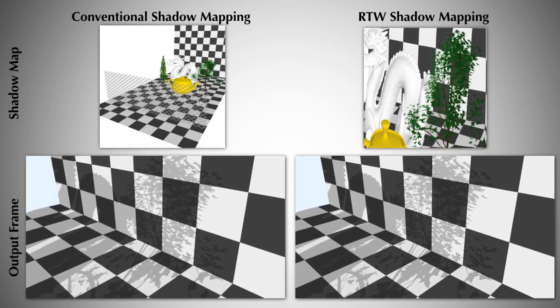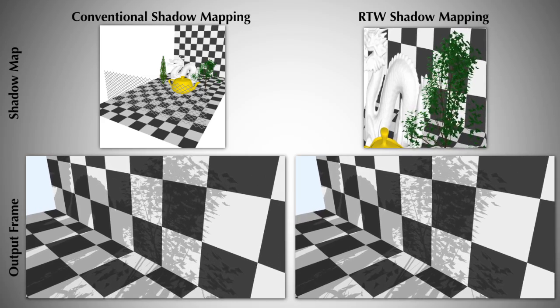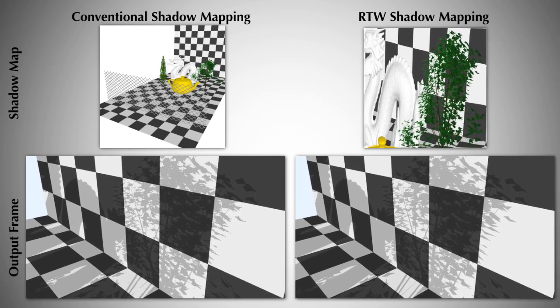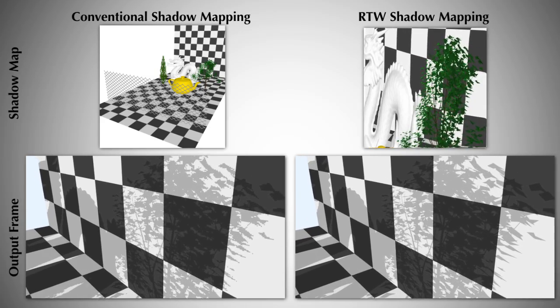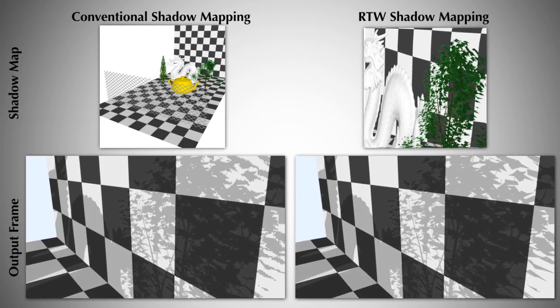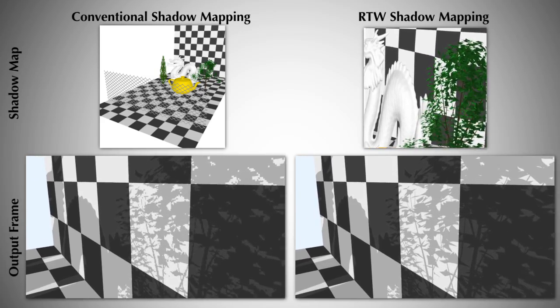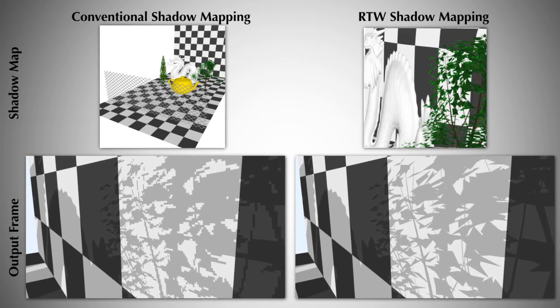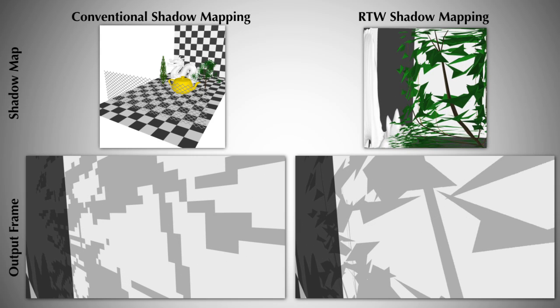While the conventional shadow map remains static throughout the entire sequence, the adaptive shadow map dynamically changes with the user's viewpoint.